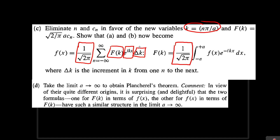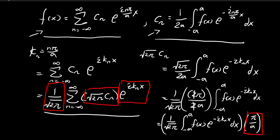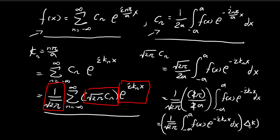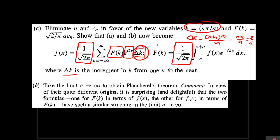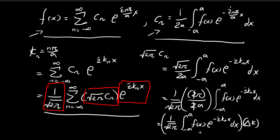I should bring to your attention that pi divided by a is actually equal to the change in k. The change in k is the increment of k from one n to the next — going from step n to step n plus 1, the change in k equals (n+1)π/a minus nπ/a, which is pi over a. So delta k equals pi over a, corresponding to this term. The integral that remains is exactly equal to f of k, so this term is indeed f of k.